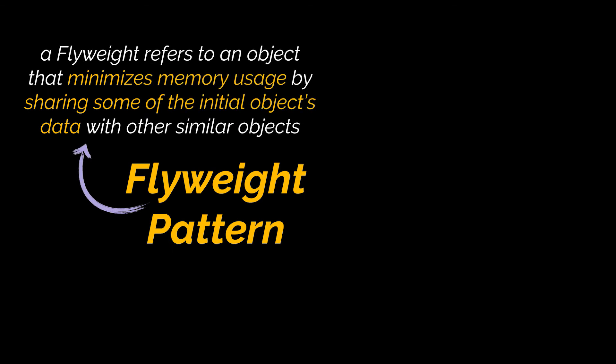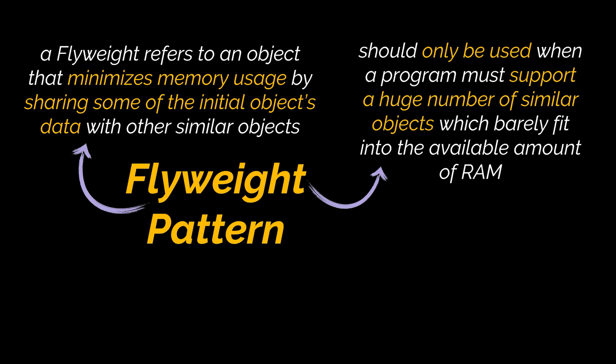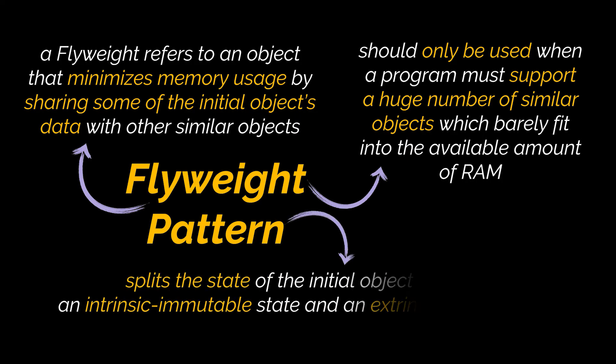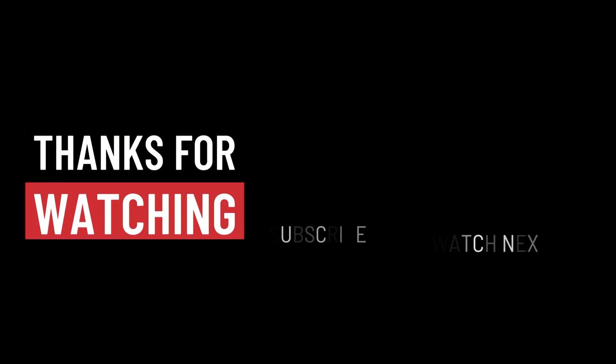To sum everything up: a flyweight refers to an object that minimizes memory usage by sharing some of our initial object's data with other similar objects. The Flyweight pattern should only be used when your program must support a huge number of similar objects which barely fit into the available amount of RAM. By applying this pattern, you will be splitting the state of your initial object into two — an intrinsic immutable state and an extrinsic mutable one. That's it for this video, I hope it was helpful — thank you guys for watching, take care, and I'll see you in the next one.